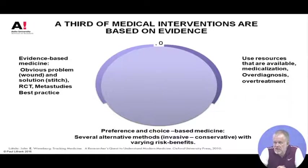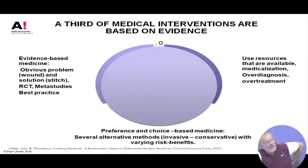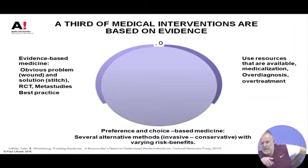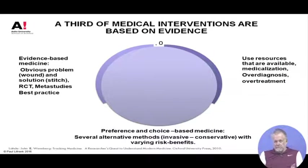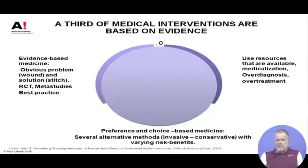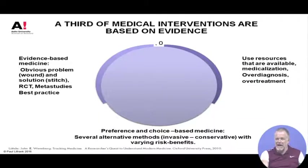About one third of the things that doctors do are of this preference-based character. Then the last slice of this pie — the last third — is what is known as supply-driven demand. Wennberg describes in detail many studies done in various parts of the United States: for example, if a medium-sized city gets a new hospital that introduces MRI cameras, there is suddenly a supply of diagnostic services.